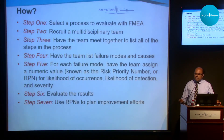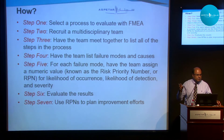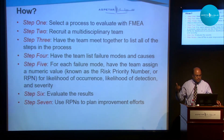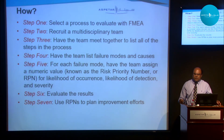This is a seven-step process. Step one: select a process to evaluate with FMEA — come up with a topic or theme. Step two: recruit a multi-disciplinary team of all stakeholders related to that topic. Step three: have the team meet together to list all the steps in the process — the end-to-end process map. Then have the team list all the failure modes, causes, and effects. For each failure mode, assign a Risk Priority Number.